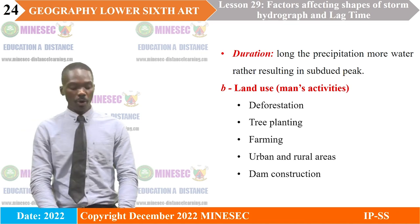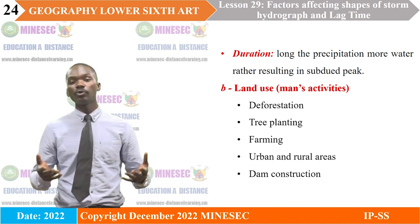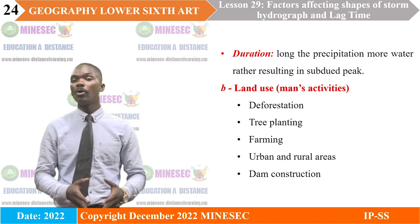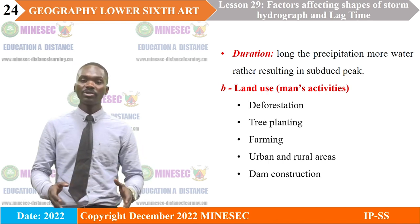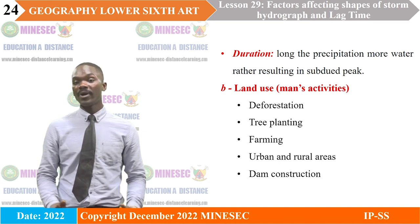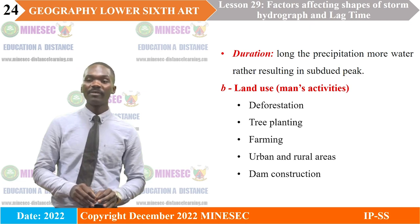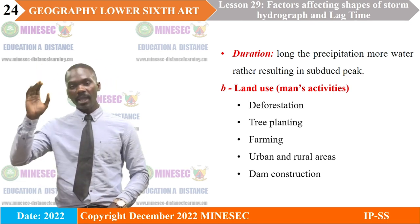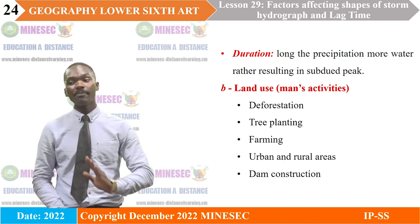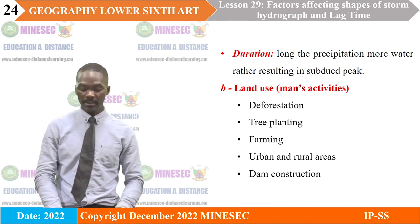In areas where we have dams, when the dam is filled or overflows it can lead to floods. We can solve this by opening damways to reduce the volume of water in dams and reduce flooding. If this is not done, the dams will produce more water developing a rapid flashy peak hydrograph through a rapid rise of both its rising limb and recession limb.